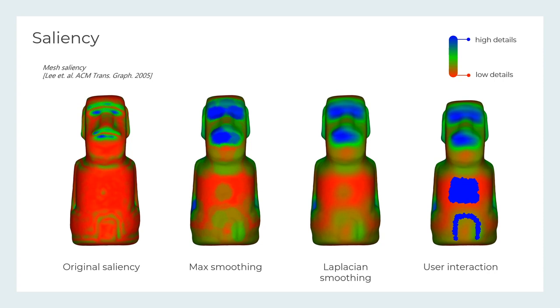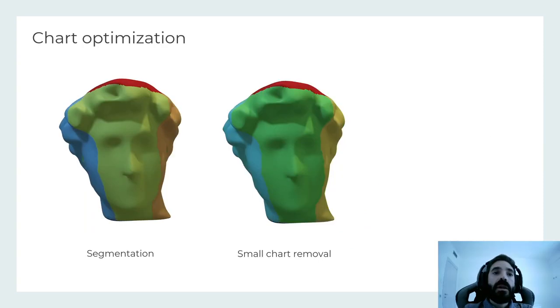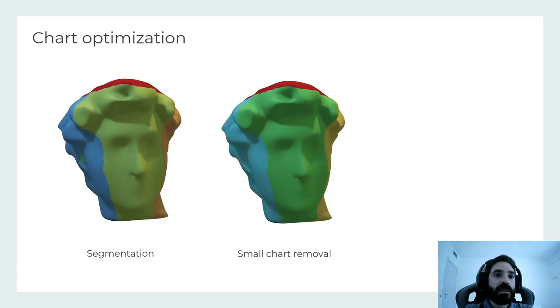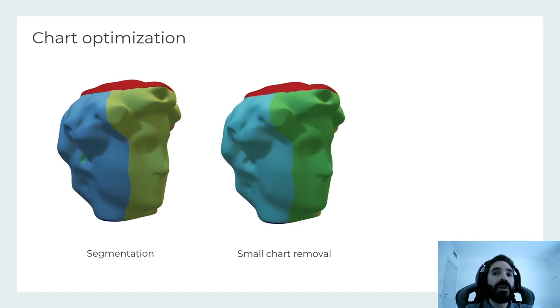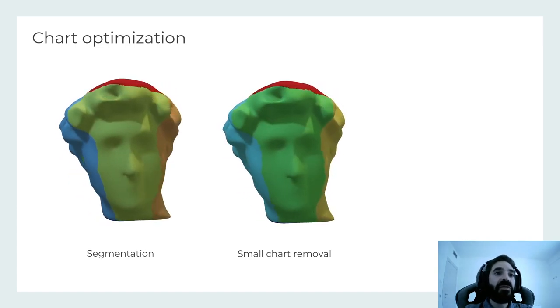For each face, we select the maximum value of the 1-ring neighborhood and perform Laplacian smoothing on these values. Additionally, in our framework, the user can interactively select areas with high saliency. However, due to occlusion, the final segmentation will present small charts. We chose to remove them iteratively, assigning faces to surrounding labels, sacrificing fidelity of the shape to have more straightforward fabrication.